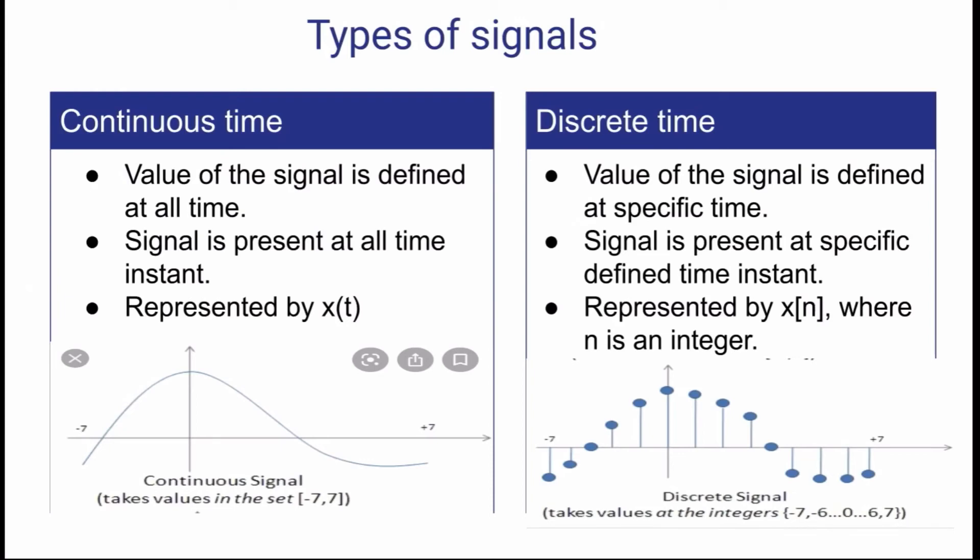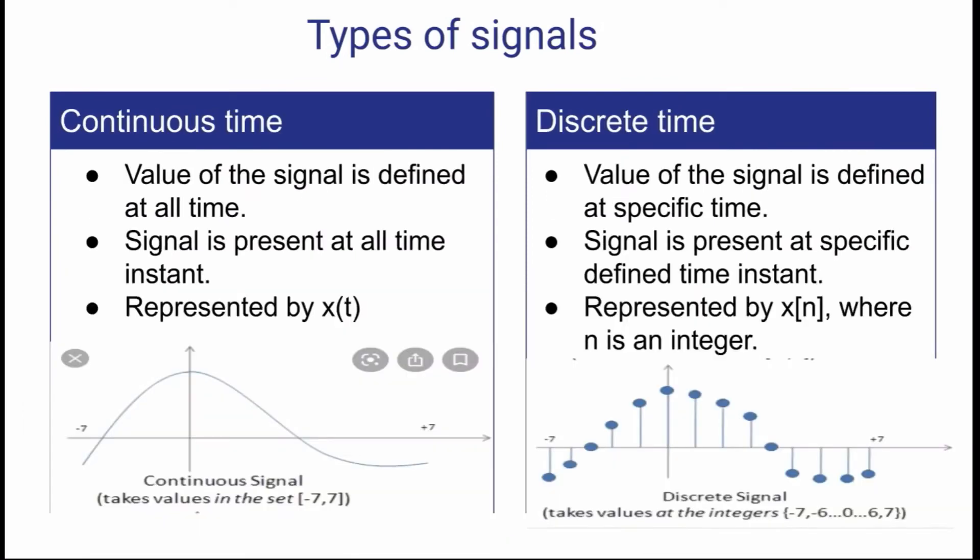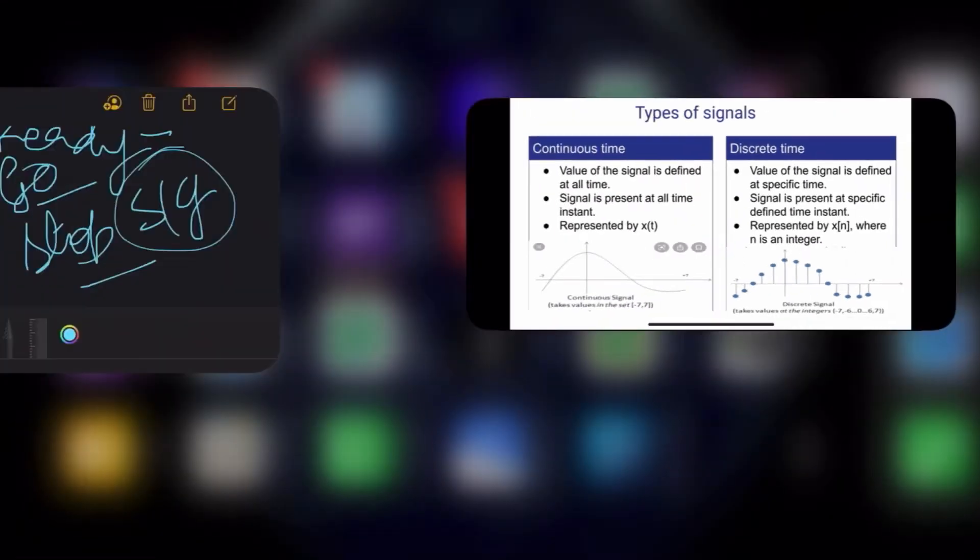Another one is your discrete time. The value of the signal is defined at specific time instant, where n is an integer, means 0, 1, 2, 3, 4 as an instant which is not decimal, it is integers. So again you have to brush up which are integers or which are not. Now this example you can see that in the continuous signal it takes the values of minus 7 to 7, from minus 7 to plus 7 it is present in continuous time signal.